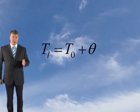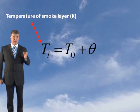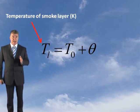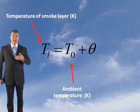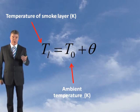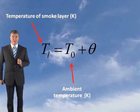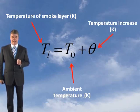Now we need to determine the absolute average temperature of the smoke. The formula to apply is: TL equals TO plus theta, where TL is the absolute average temperature of the smoke layer, TO is the ambient air temperature which is normally taken as 288 degrees Kelvin, and theta is the temperature increase.